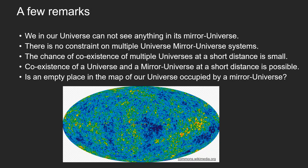As you may know, there exists today much imagination about whether our universe has some companions. You could hear interesting terminologies such as parallel universe, multi-level universe, multiple universe, mirror universe, etc. The new cycling model could raise more imaginations, of course. I tried to narrow my imagination with the new philosophy theory. First, we in our universe cannot see anything in its mirror universe, because the universe and its mirror universe are in a cycling. Second, there is no constraint on multiple universe-mirror universe systems in the new theory — this is interesting.